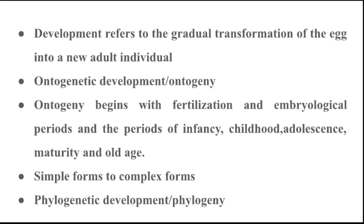Ontogenic development is the process of transformation of the egg into a new adult individual. Ontogeny begins with fertilization and includes the embryological period and the periods of infancy, childhood, adolescence, maturity, and old age. That total process is called ontogeny, and it starts with fertilization.